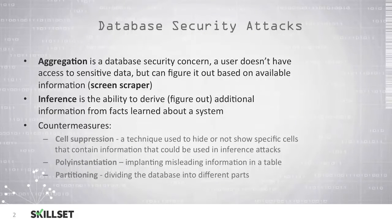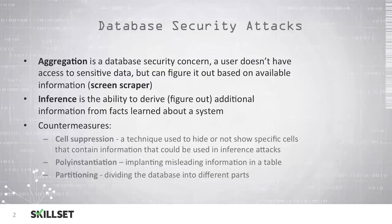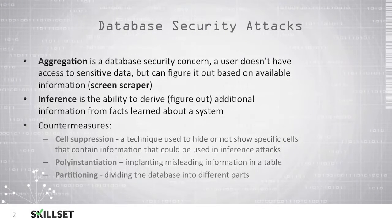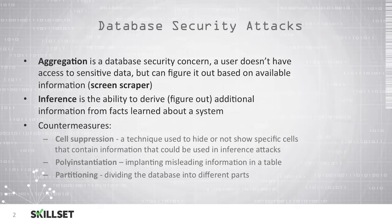The countermeasures that can be used to combat aggregation and inference are: cell suppression, where you hide or not show specific cells that contain information that could be used in an inference attack; polyinstantiation, where you implant misleading information into a table; and partitioning, where you divide the database into different parts.